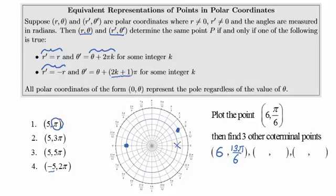Another equivalent representation would be the ordered pair 6, 25 pi over 6. Another one would be 6, 37 pi over 6. I hope this is helpful and I'll see you in the next video.